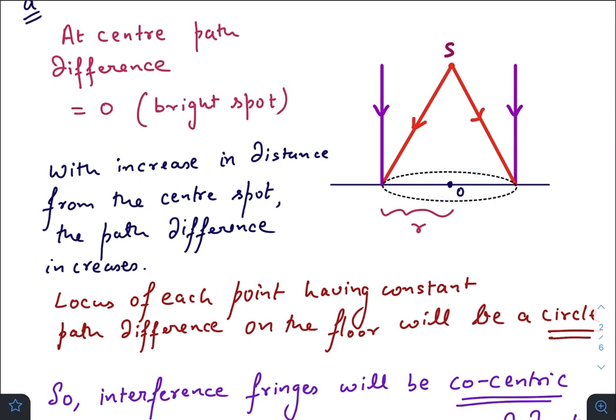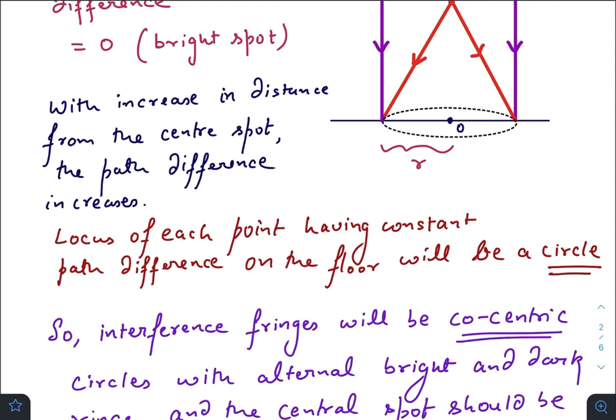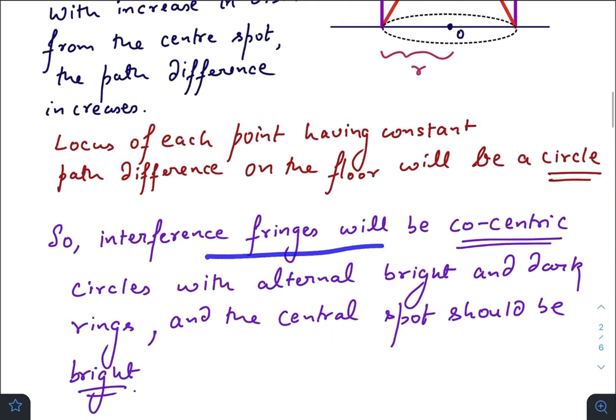Hence there will be a bright spot at the center. At some distance r from the center, there will be some path difference, and that path difference will be constant for a circle of radius r. So I hope you can understand that the interference fringes will be concentric circles.